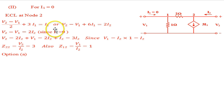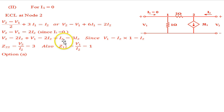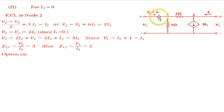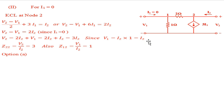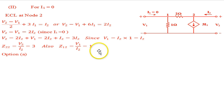With I1 = 0, the current I2 cannot flow through the current source branch and instead flows through the 1-ohm resistor, making V1 = I2 × 1 = I2. Substituting into V2 = 2I2 + V1 gives V2 = 2I2 + I2 = 3I2. Therefore Z22 = V2/I2 = 3 ohms and Z12 = V1/I2 = 1 ohm.